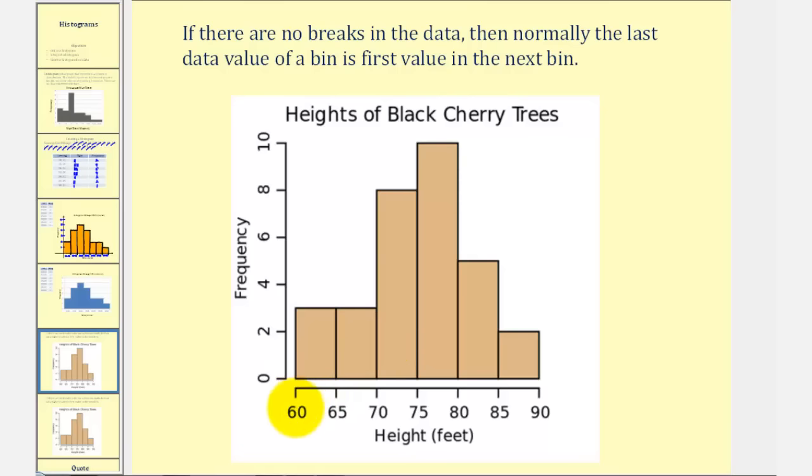This first interval is from sixty to sixty-five. Where if we use interval notation, it would be closed on sixty, meaning it includes sixty, but it would be open on sixty-five, meaning it does not include sixty-five. The next interval would be closed on sixty-five and open on seventy. The value of seventy would be in this third interval. The third interval would be closed on seventy, meaning it includes seventy, but open on seventy-five, meaning it does not include seventy-five. And so on. So it is important to keep this in mind if you see a histogram labeled as we do here.